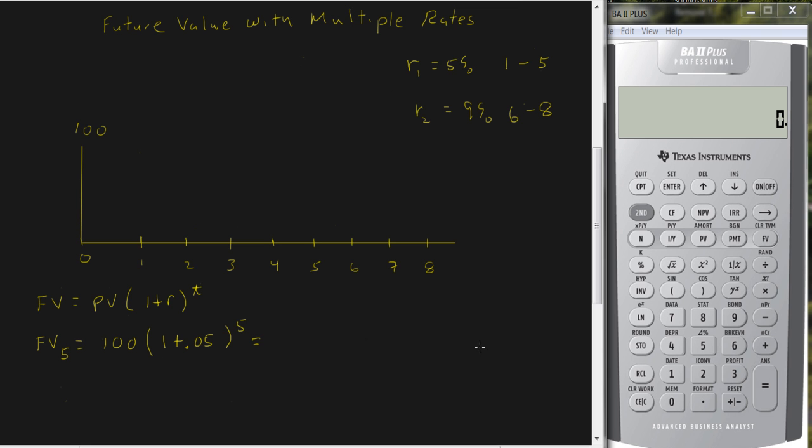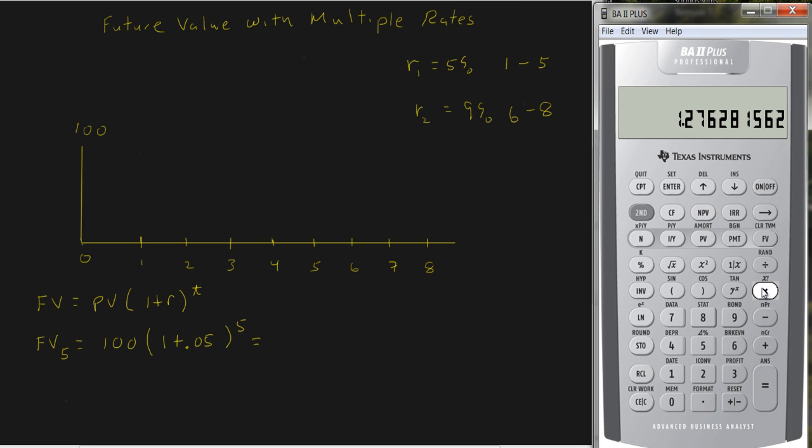And we're going to get 1.05 raised to the 5th power times 100. And so we get 127.63. So this is in year 5, it's 127.63.